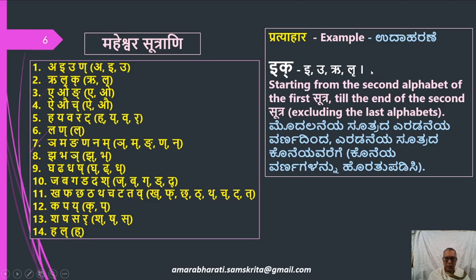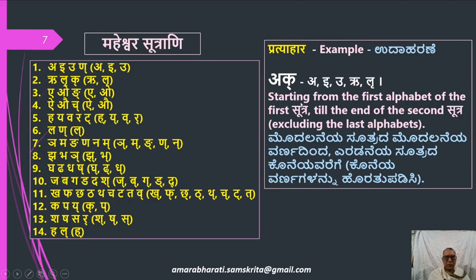Another example: Ak. Starting from the first alphabet of the first sutra, A, till the end of the second sutra, K — so A, E, U, R, L, R, A, E, O, R, L, R. That is the Ak Pratyahara.